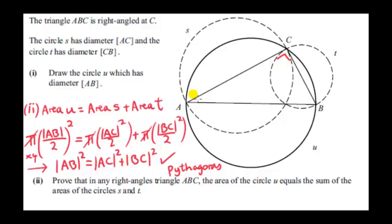This is just Pythagoras' theorem. We have a right-angle triangle, and it states that the longest side squared, AB squared, equals the sum of the squares of the two short sides. So if Pythagoras' theorem is true and we reverse the steps, we end up showing that the area of the circle on the hypotenuse equals the sum of the areas of the circles on the two short sides.